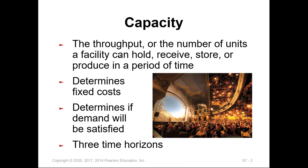Capacity or throughput is the number of units a facility can hold, receive, store, or produce in a period of time. Looking at the definition, we recognize some of the reasons why capacity is an issue. For example, capacity can determine fixed cost — the cost required to build and deliver the product. It can also determine if demand will be satisfied, meaning can we produce the proper amount that the market needs.